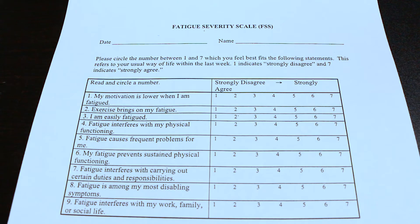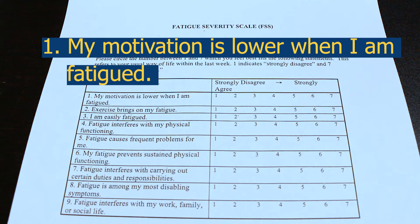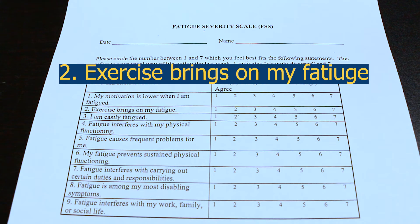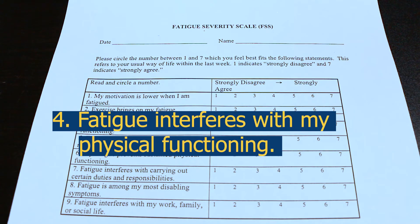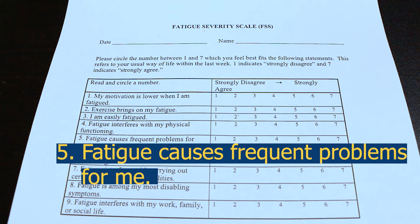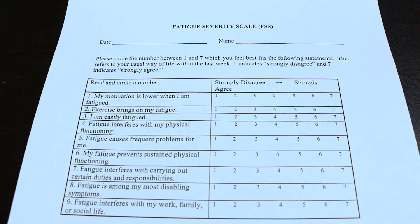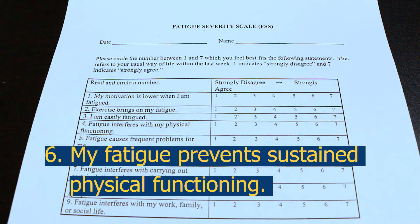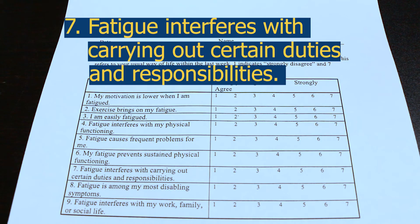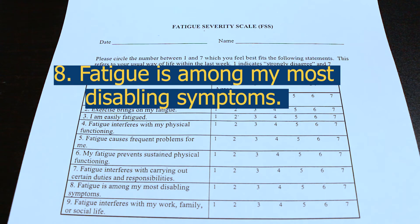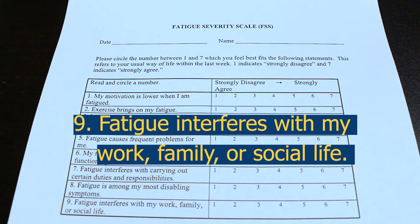Here is a close-up view of the nine questions. Number one: my motivation is lower when I am fatigued. Two: exercise brings on my fatigue. Three: I am easily fatigued. Four: fatigue interferes with my physical functioning. Five: fatigue causes frequent problems for me. Six: my fatigue prevents sustained physical functioning. Seven: fatigue interferes with carrying out certain duties and responsibilities. Eight: fatigue is among my most disabling symptoms. Nine: fatigue interferes with my work, family, or social life.